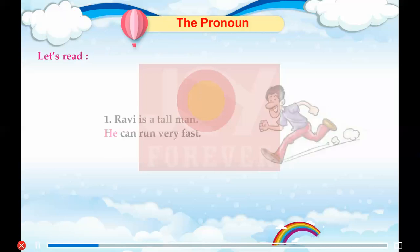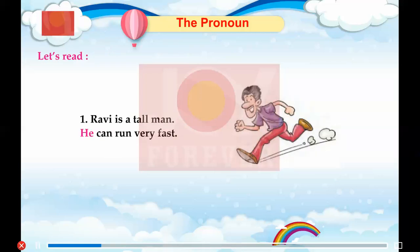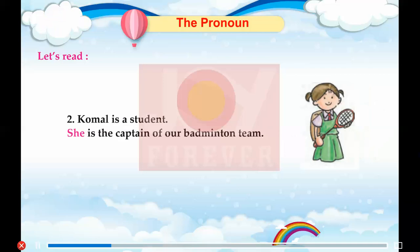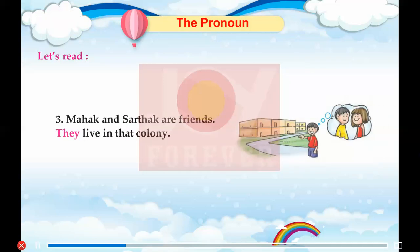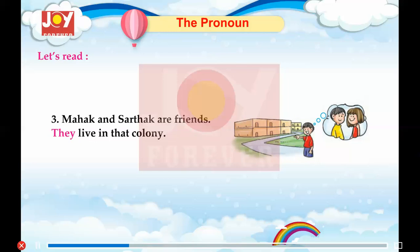Let's read. 1. Ravi is a tall man. He can run very fast. 2. Komal is a student. She is the captain of our badminton team. 3. Mehek and Saathak are friends. They live in that colony.